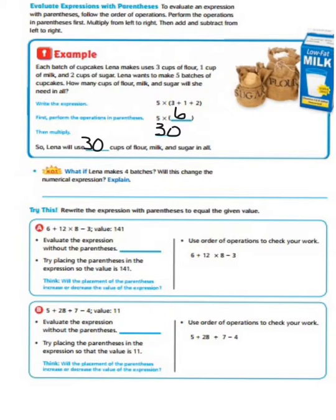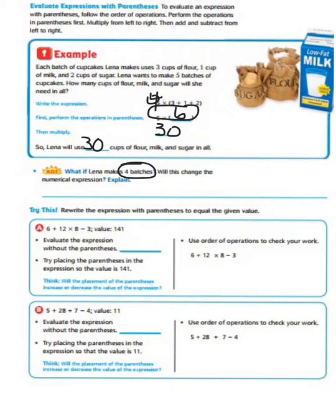What if Lena makes 4 batches? Will this change the numerical expression? Yes, because the 4 would replace the 5. The value of the numerical expression would change to 24, because instead of 5 times 6, it would be 4 times 6. So our answer would be 24 versus 30.